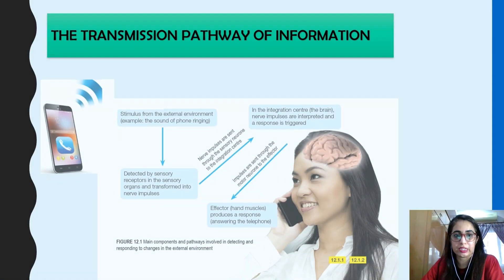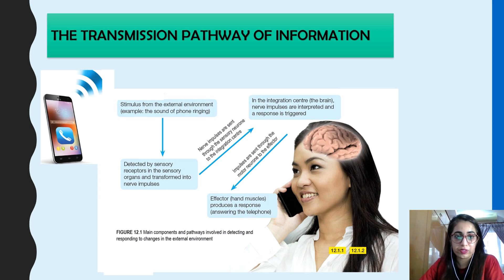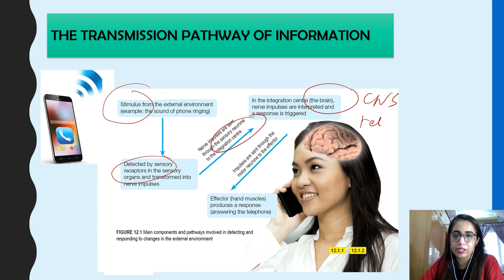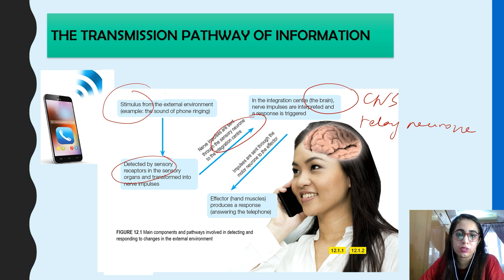The transmission pathway of information: a stimulus from the external environment — for example, a sound — is detected by the sensory receptor, transformed into nerve impulses, and sent through the sensory neuron to the brain (CNS). The interneuron (relay neuron) in the CNS receives the information from the afferent neuron and sends it through the efferent (motor) neuron to the effector. The effector, such as a hand muscle, produces a response — for example, picking up a cord.